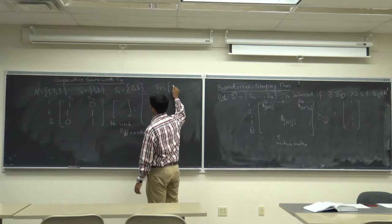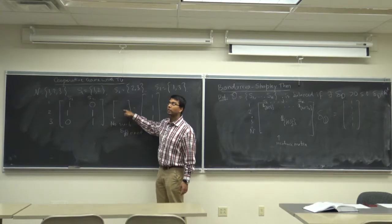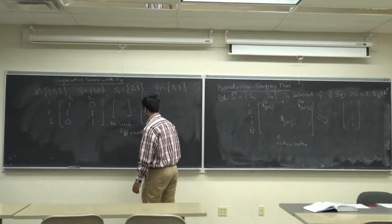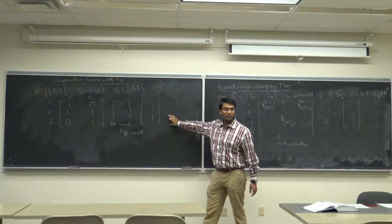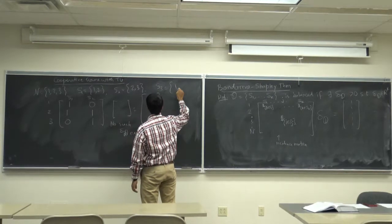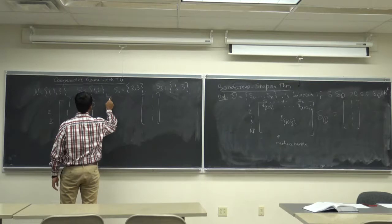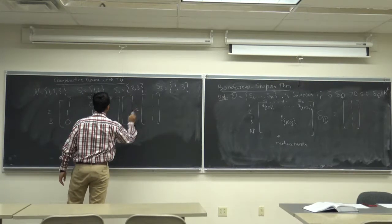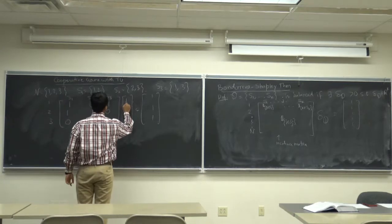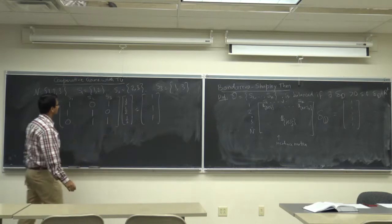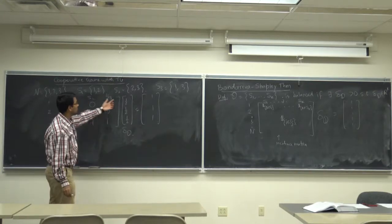If we add S3 = {1,3}, it suddenly becomes balanced. The updated incidence matrix gains a column: 1 in S3 (yes), 2 in S3 (no), 3 in S3 (yes). Then delta(D) = (1/2, 1/2, 1/2) gives exactly the vector (1, 1, 1). So delta(D) exists and therefore {S1, S2, S3} is a balanced coalition.